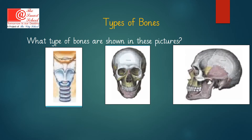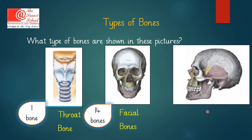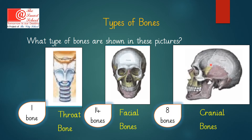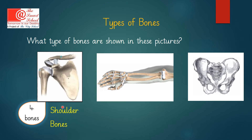Now that you have seen the different types of Bones in the Human Skeleton, we shall see their names one by one and their numbers. The Throat Bone is only 1 in number. The Facial Bones join together to form our Face and they are 14 in number. The Cranial Bones join together to make our Skull and they are 8 in number. The Shoulder Bones total 4 in number.